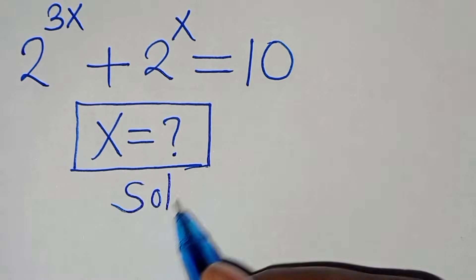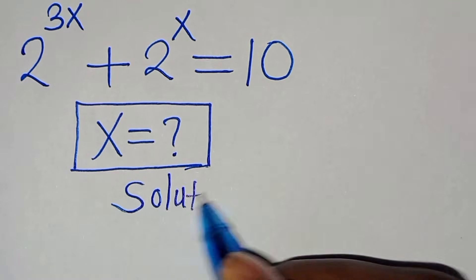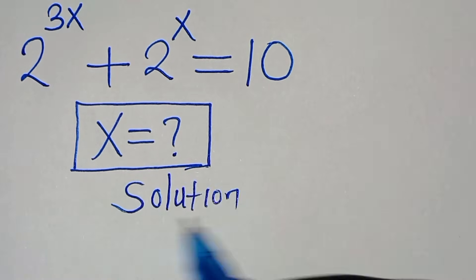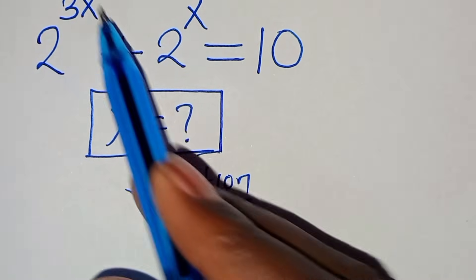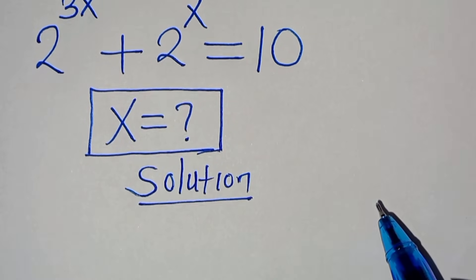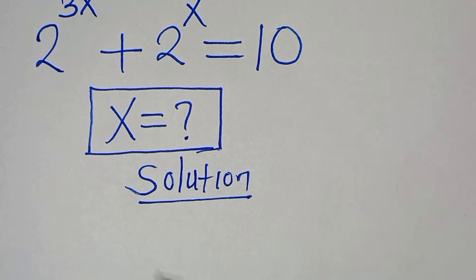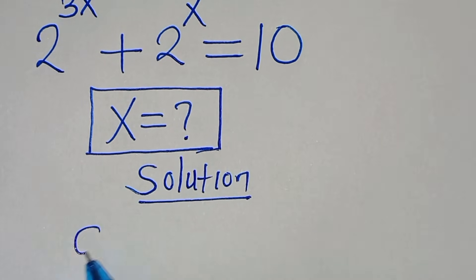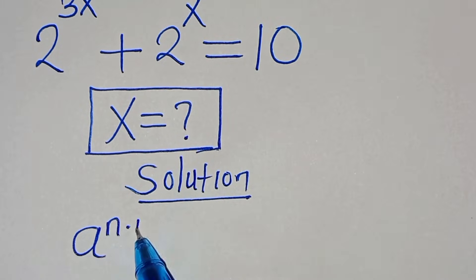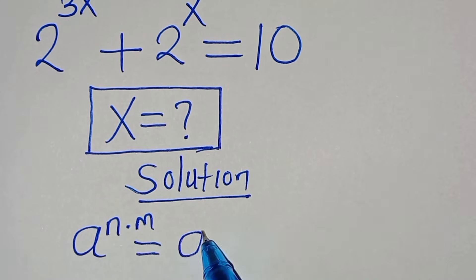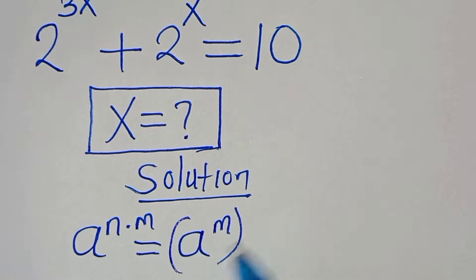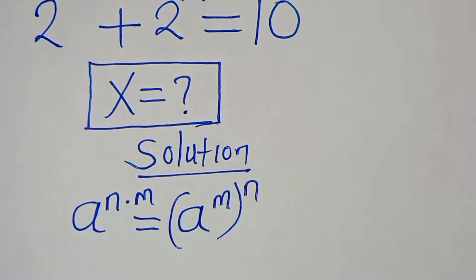Now let's provide a solution. 2 to the power of 3x is actually in the form of a to the power of n multiplied by m, which we can express as a to the power of m raised to the power of n.